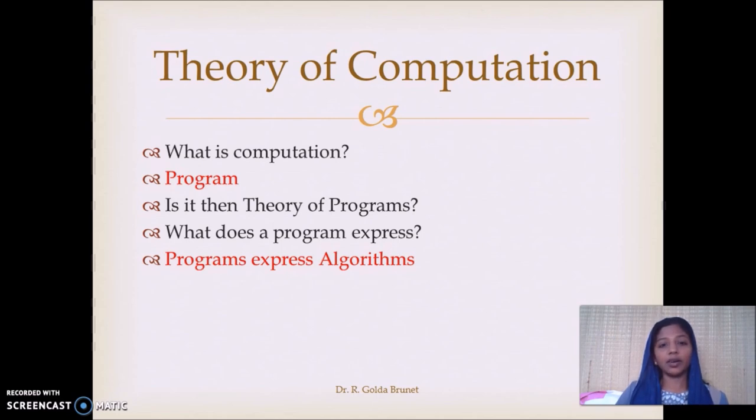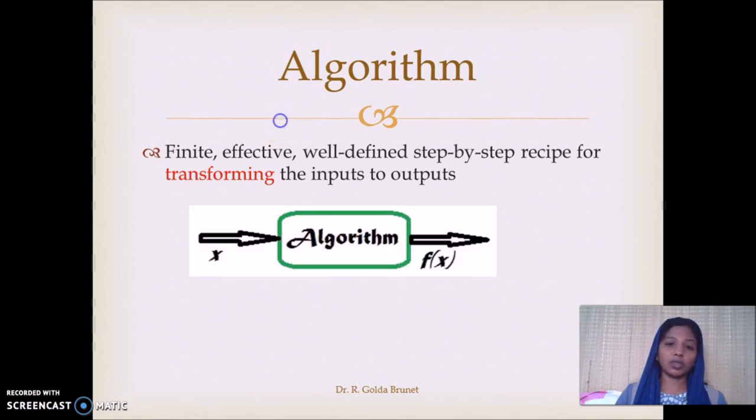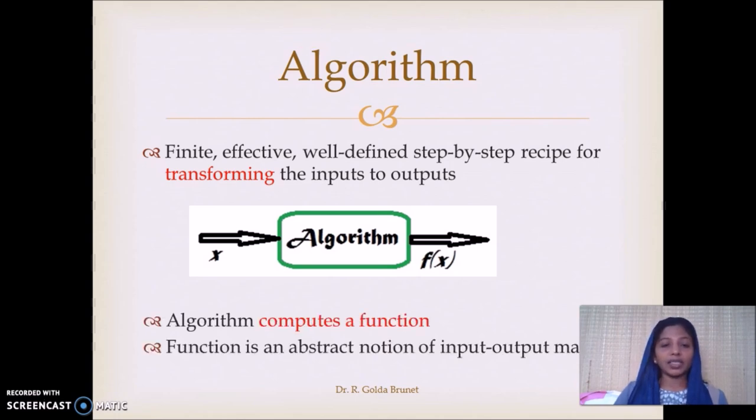So, is it then the Theory of Algorithms? Maybe. So, let us try and understand what is algorithm. An algorithm is a finite, effective, well-defined, step-by-step recipe for transforming the inputs to outputs f of x. So, the algorithm accepts the input x and transforms it to the output f of x. So, we can think of this algorithm as a function which transforms the input x to the output f of x. So, we can say the algorithm computes a function and we know that mathematically function is an abstract notion of input-output mapping.